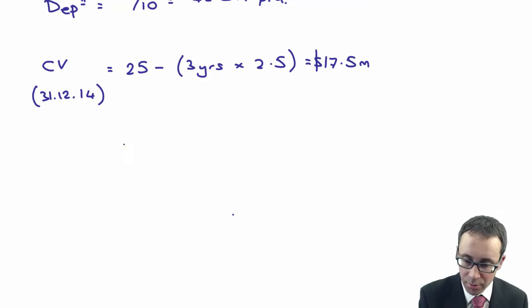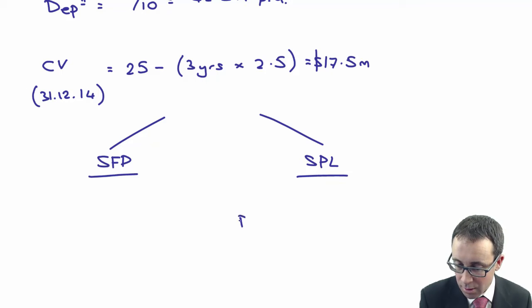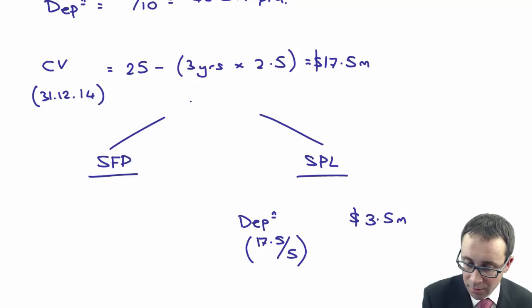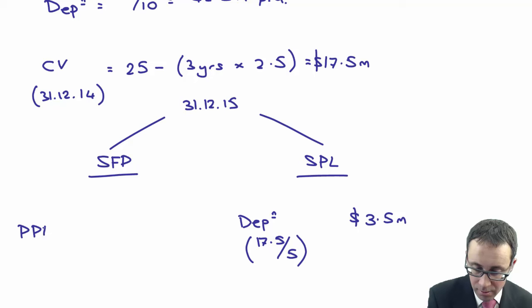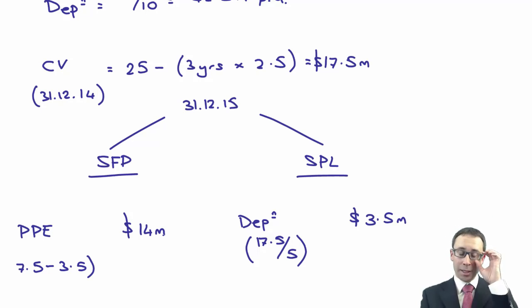So what we need to do now is put that into the financial statements. We're going through and looking at the SFP and the statement of profit or loss. In the statement of profit or loss, we have the depreciation, which is your carrying value divided by the new remaining life. So my depreciation is now $3.5 million for the 31st of December 2015. And then in terms of the SFP, the property plant and equipment is the 17.5 less the 3.5. Does that work out at $14 million? So in the SFP, you need to get a figure of 14, the depreciation is 3.5.